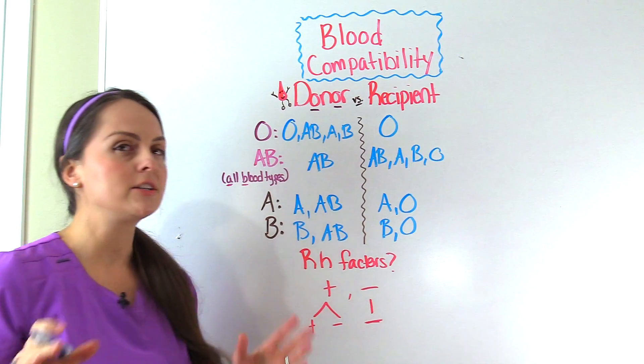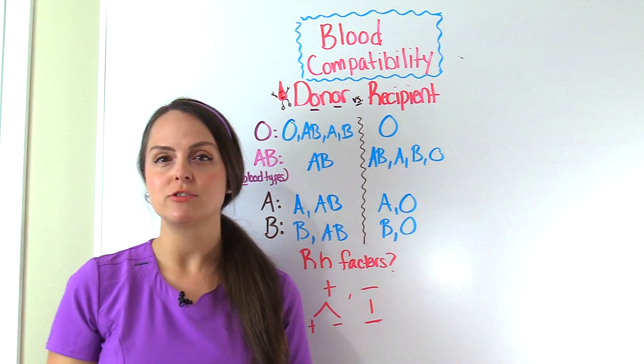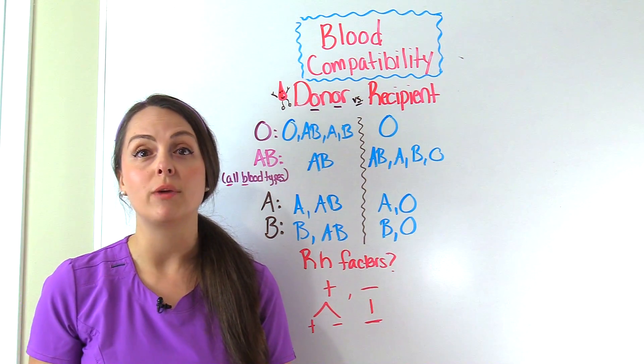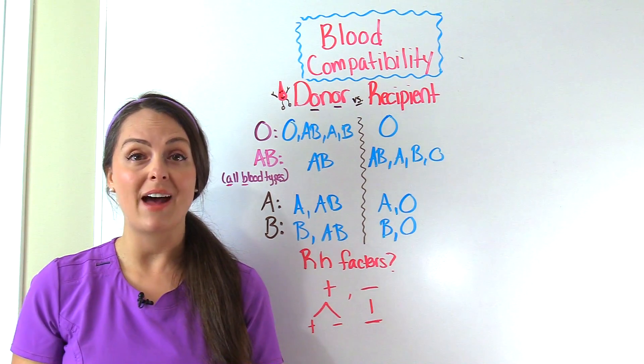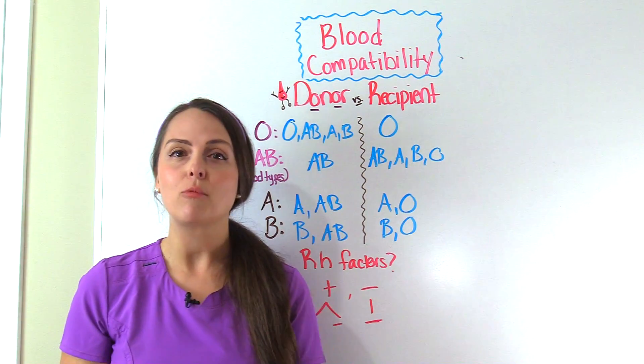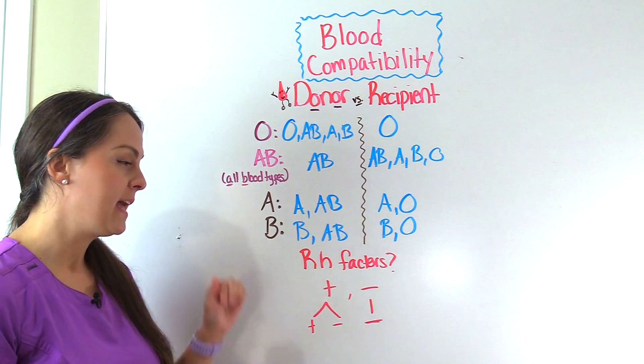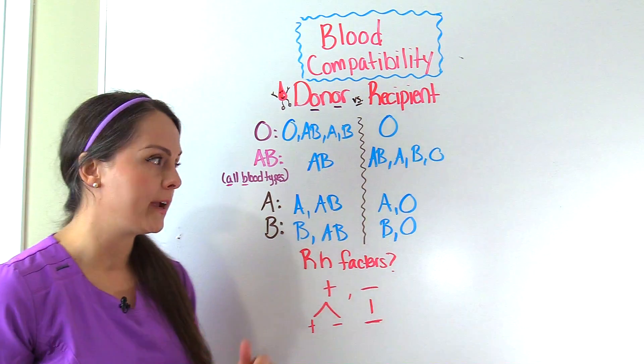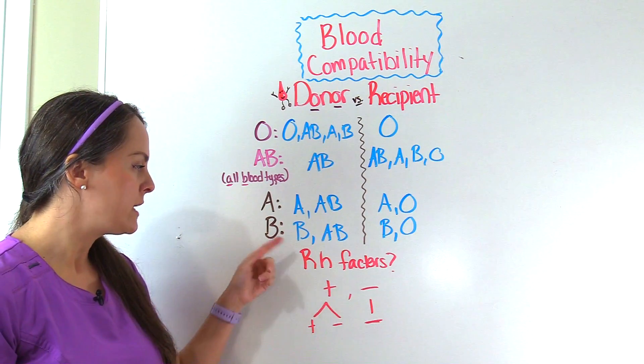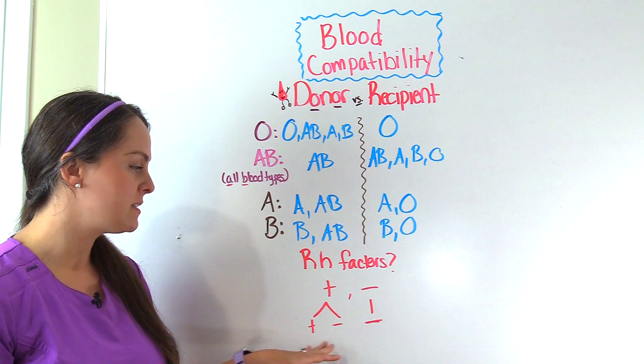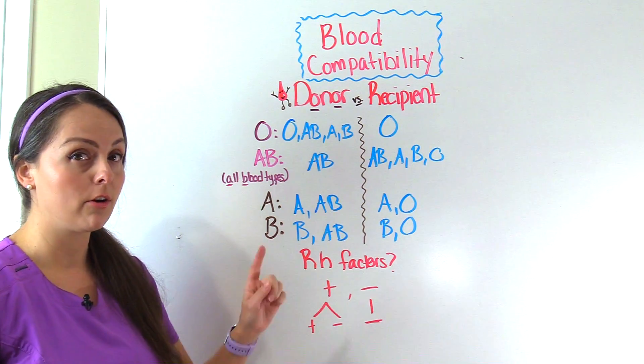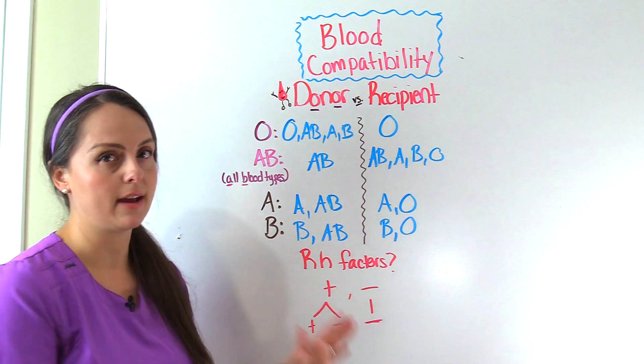Now let's talk about RH factor. These are special factors found on red blood cells. Either a red blood cell has them or they don't. If they have these factors, the person is RH positive. If they don't, they're RH negative. An RH positive person can receive positive and negative blood. However, an RH negative person can only receive negative blood.